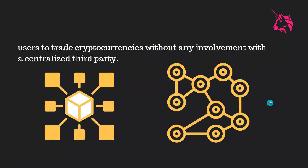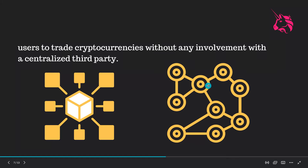Let's understand how centralized exchange works versus decentralized exchange. On the left-hand side you can see a single block which contains all the information about transactions and data — all these nodes represent you. When you connect yourself with a centralized authority, that's how you're represented. On the decentralized side, there is no fixed block which controls all the data.